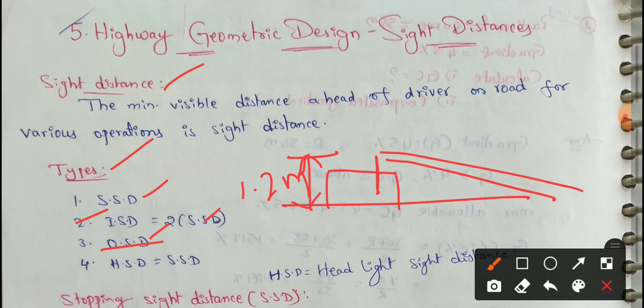Next one is HSD. HSD means Headlight Sight Distance. HSD equal to SSD in maximum all cases except valley curves.